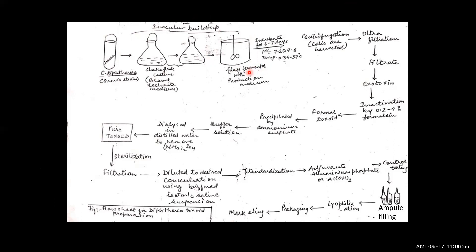In summary: the first step is inoculum build-up, followed by fermentation in a glass fermenter with controlled temperature, pH, and aeration. Cells are separated by centrifugation or filter press, and the filtrate containing exotoxin is inactivated with formalin to form formal toxoid. The toxoid is precipitated with ammonium sulfate, dialyzed in distilled water to remove ammonium sulfate, filtered, and diluted to the desired potency using buffered saline. Adjuvants are added, control and purity testing is performed, followed by ampoule filling, lyophilizing, packaging, and marketing.